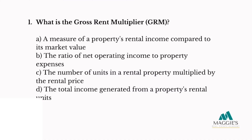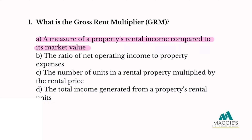Question one: What is the gross rent multiplier? A. A measure of a property's rental income compared to its market value. B. The ratio of net operating income to property expenses. C. The number of units in a rental property multiplied by the rental price. Or D. The total income generated from a property's rental units. The correct answer to number one is A — a measure of a property's rental income compared to its market value.